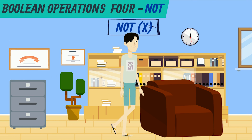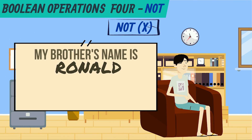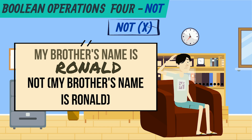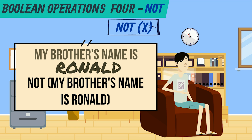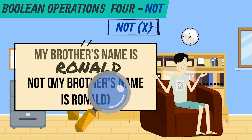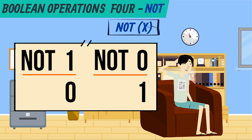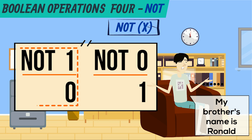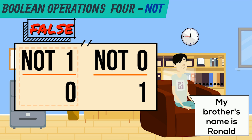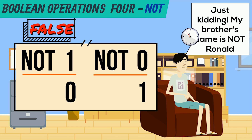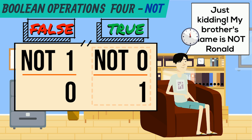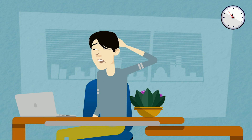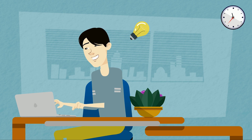NOT X. For example, my brother's name is Ronald. In a Boolean NOT operation, that statement would look like: NOT (my brother's name is Ronald). What the NOT statement does is determine the truth or falseness of what is inside the parentheses — 'my brother's name is Ronald' — and then reverses that result. So if it's true, then the whole NOT statement results in false. If my brother's name is NOT Ronald, then the whole NOT statement is true. Kind of odd, but very useful in programming languages as you'll see later in this course.